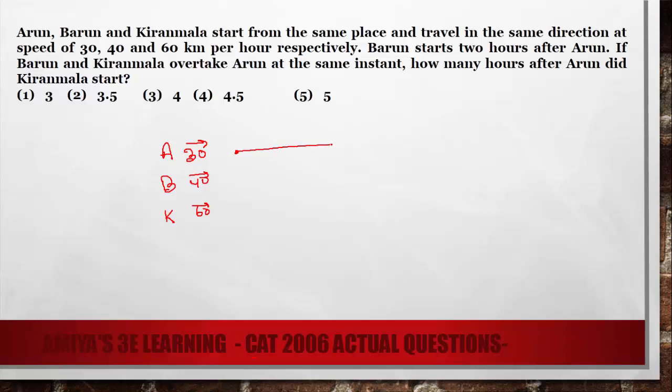So we have first A starts, then B, then K follow and they meet at the same place at the same time. What does it mean? Since they are starting from the same place and meeting at the same place, the distance is constant.